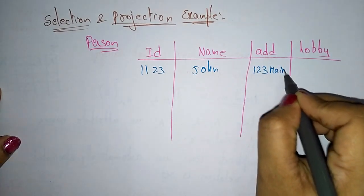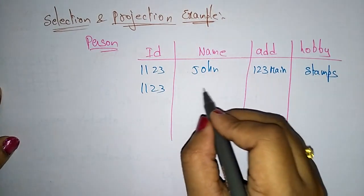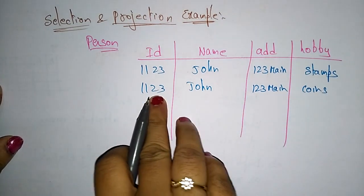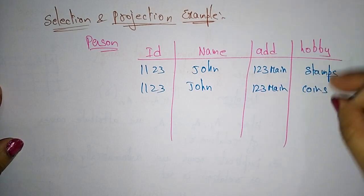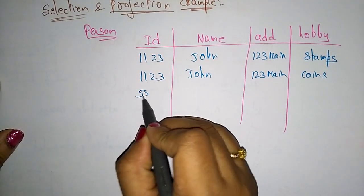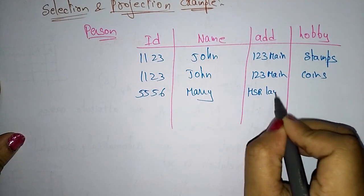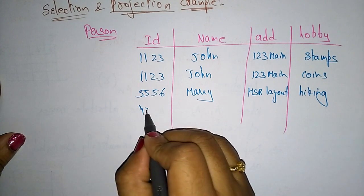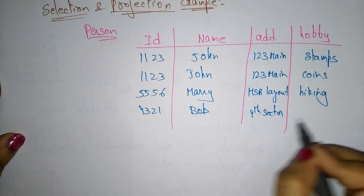The data in the person table: id 1123, name John, address 123 Main Street, hobby stamp collection. The same id 1123, name John, address 123 Main, hobby coins — so the same person at the same address has two hobbies. Then id 556, name Mary, address HSR Layout, hobby hiking. And id 4321, name Bob, address Fourth Sector, hobby stamp collection.